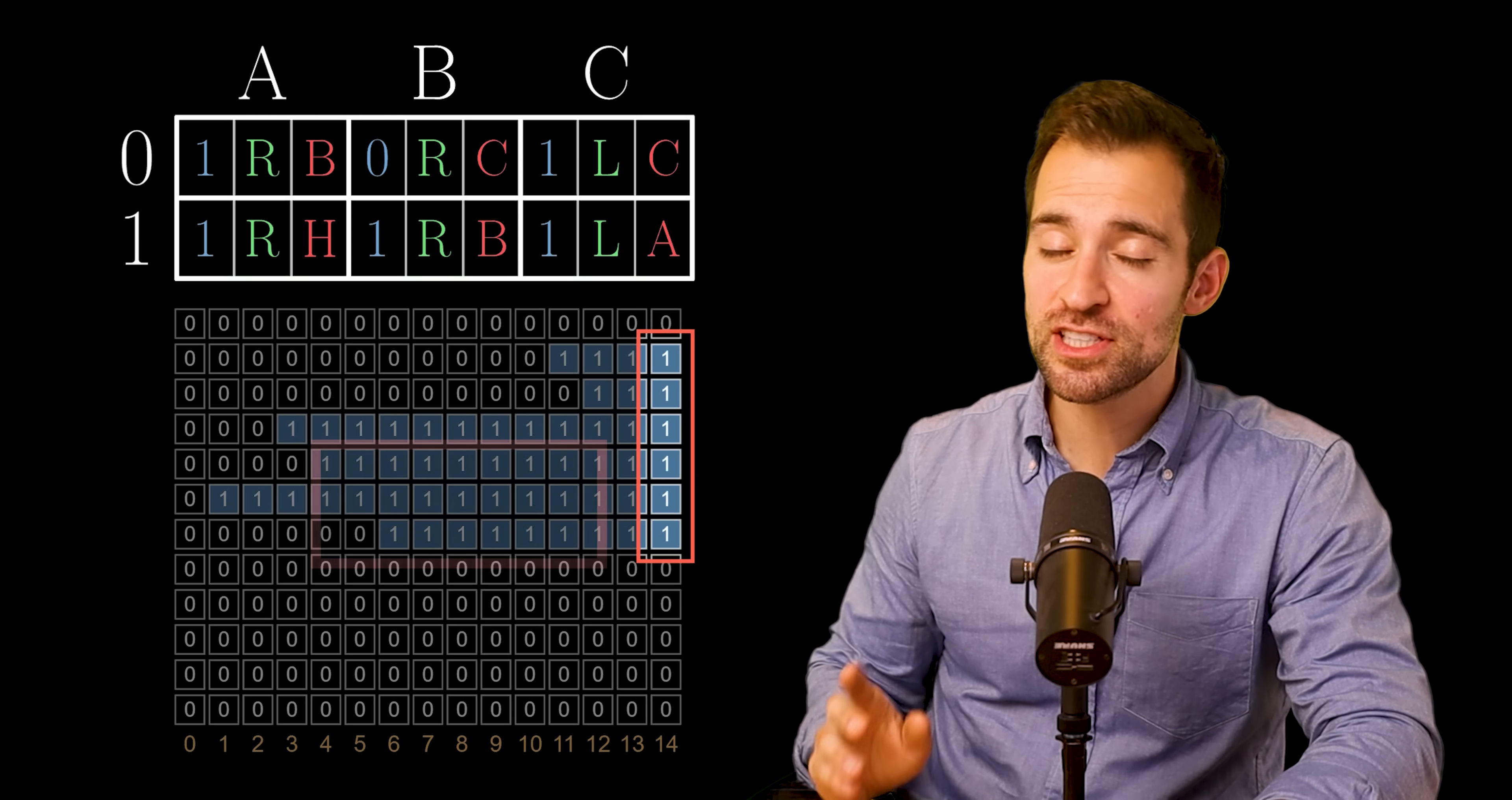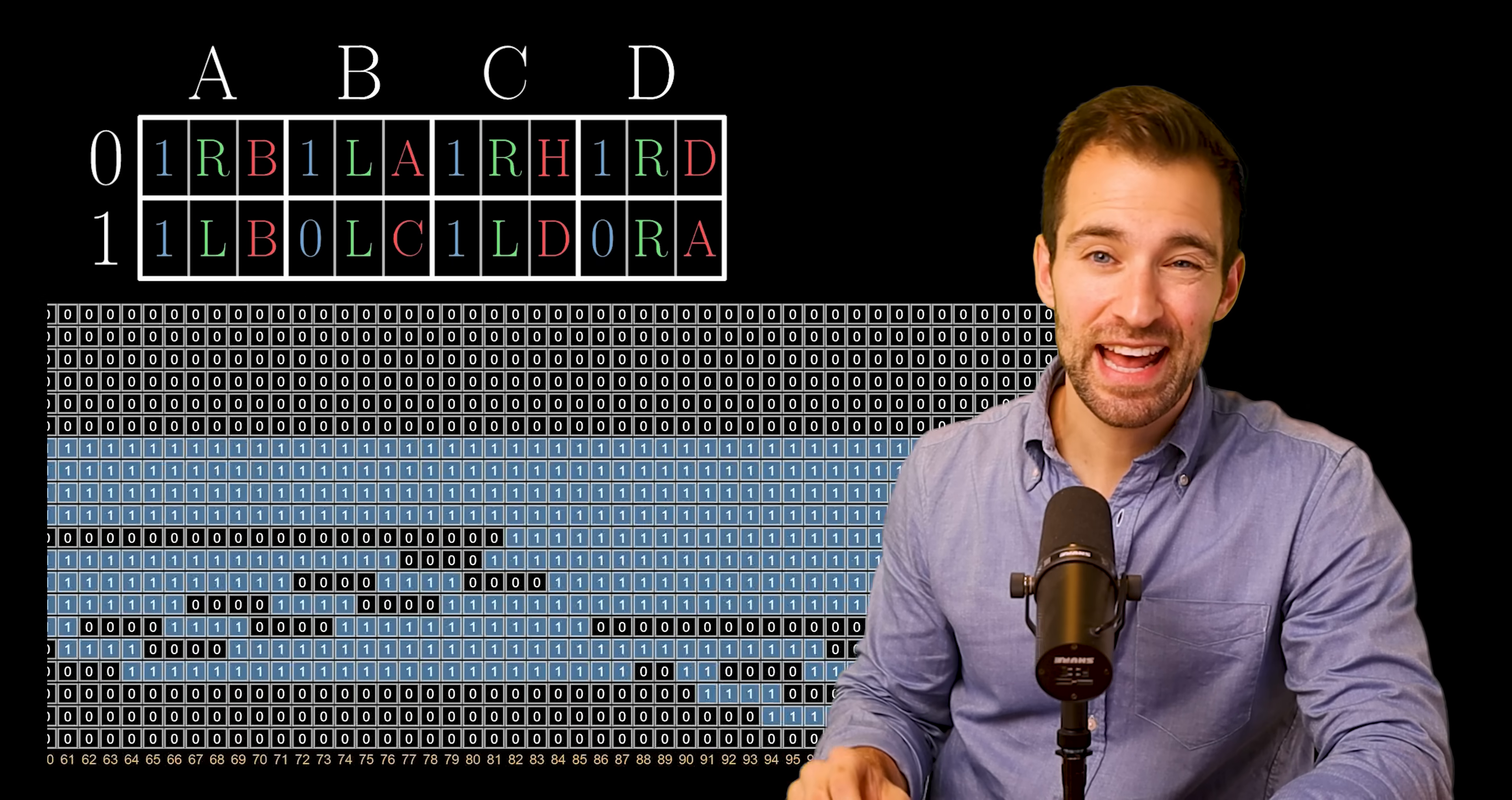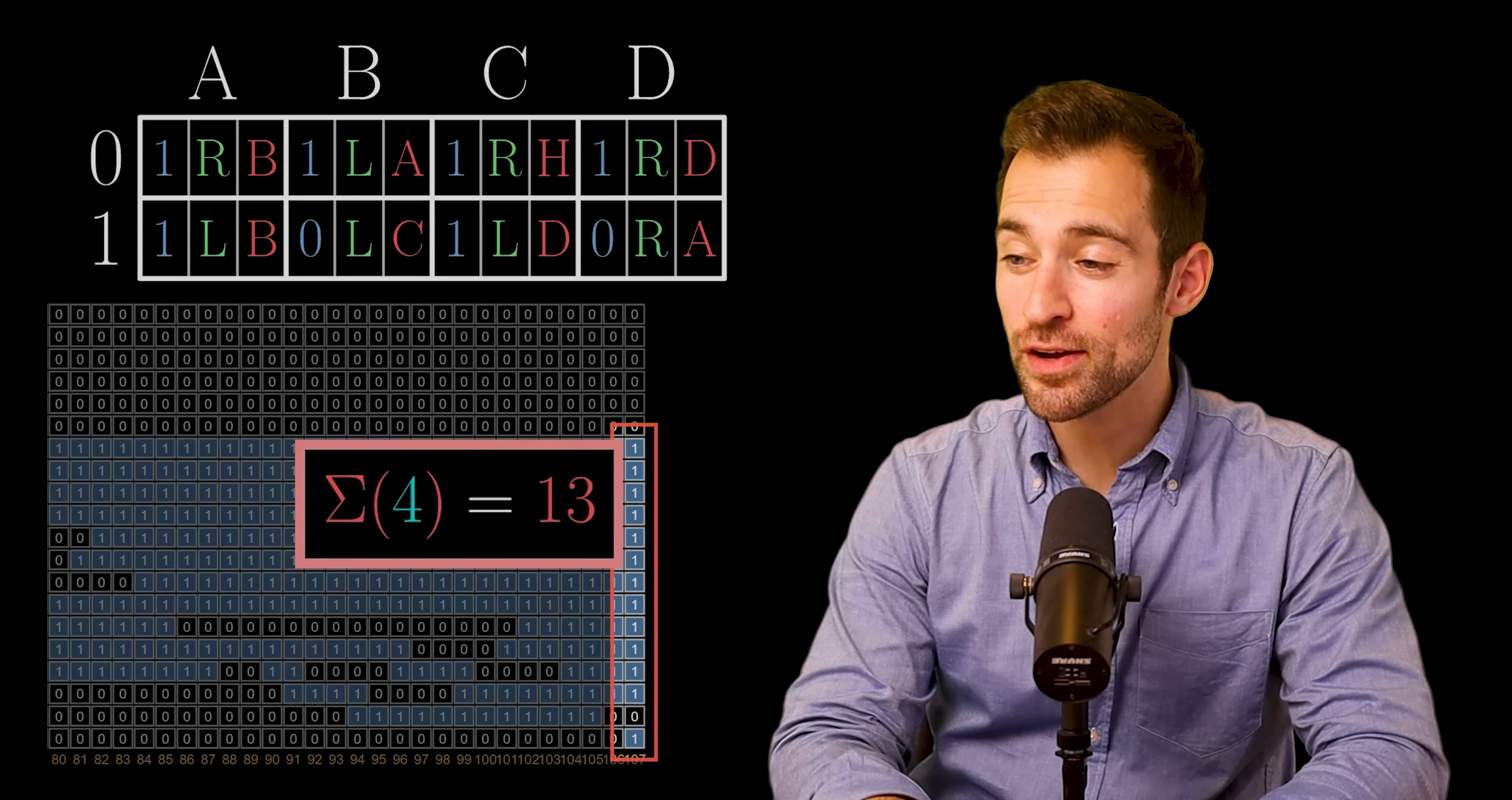And we continue this process. The BusyBeaver for three states gives this tape history, which ends with six ones. So, sigma three is six. And for four states, we have this BusyBeaver state table. And that produces this tape history, ending with 13 ones. So, sigma four is 13. And five states? Well, humanity has not yet been able to calculate this number.